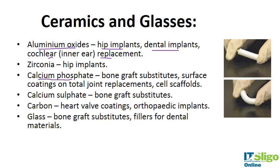Calcium phosphates are also used for scaffolds in tissue engineering. They invite bone formation and allow osteoblast cells to start regenerating bone tissue, which is why they are very good for bone grafts. Calcium sulfates are also used for bone grafts, carbon for heart valve coatings and orthopedic implants.